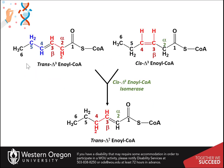This intermediate is very similar to the situation with the cis double bond between carbons 3 and 4. However, this bond is in the trans conformation. Fortunately, the enoyl-CoA isomerase enzyme can recognize both of these isomers and convert both the cis and the trans double bonds to the 2,3-carbon position, from where it can enter back into the beta oxidation pathway.